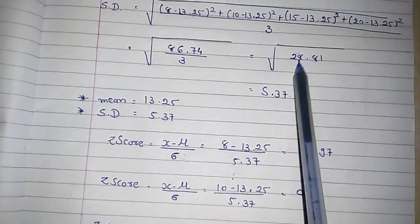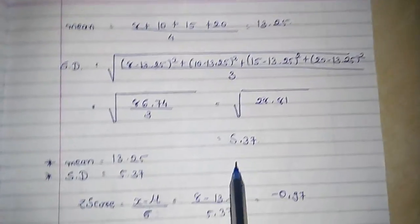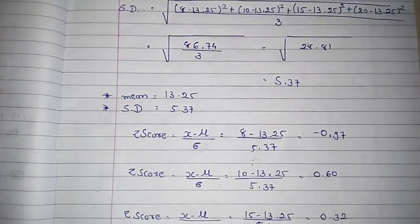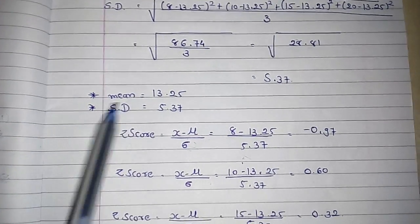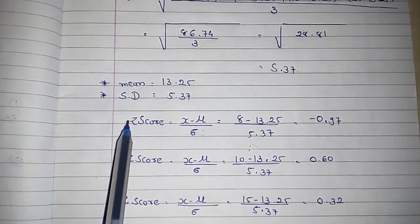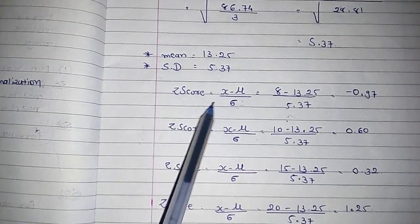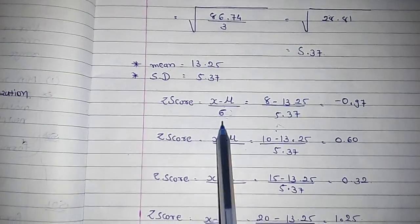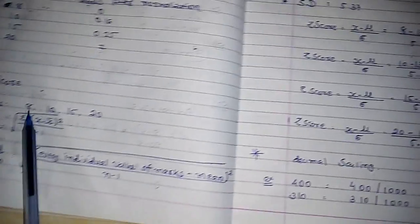You will get the square root of 28.81, which equals 5.37. Now we have the mean and standard deviation. From that we have to find out the z-score. For the z-score there is another formula: z equals x minus mu upon standard deviation.